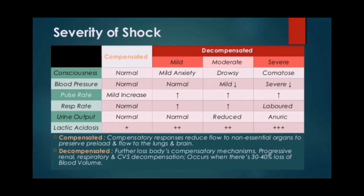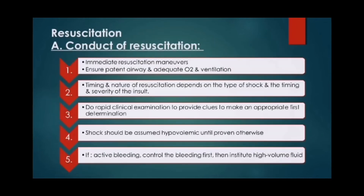Compensated shock diverts flow away from non-essential organs to preserve preload and flow to the lungs and brain. Decompensation occurs with further loss of blood volume, as the body's compensatory mechanisms fail, leading to progressive renal and respiratory deterioration. Severe decompensation occurs when there is 30 to 40 percent loss of blood volume.